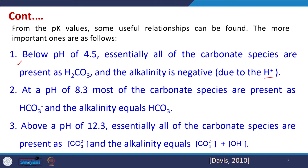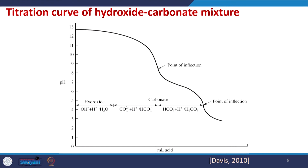At pH 8.3, most of the carbonate species are present as bicarbonate ion and the alkalinity equals that of the bicarbonate ion. Above pH 12.3, essentially all the carbonate species are present as carbonate ion and alkalinity equals carbonate ion plus OH⁻ ion. To find the alkalinity of water, we start adding acid, measure the amount of acid used, and measure the pH — generally H2SO4 is used as the acid.